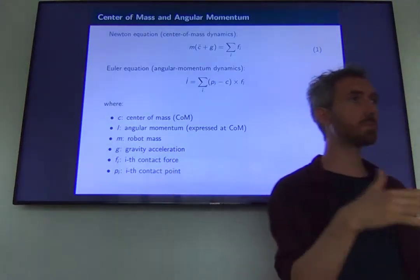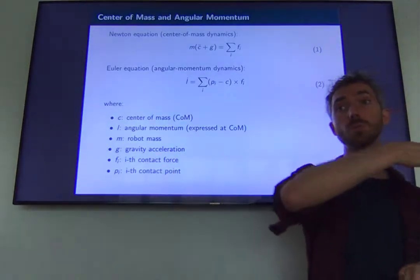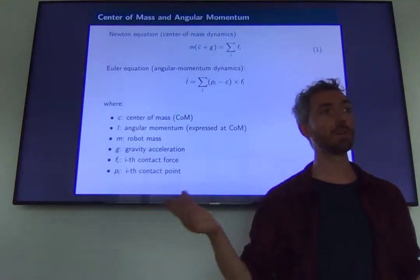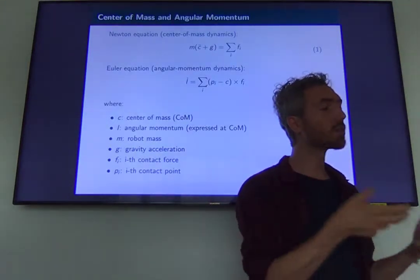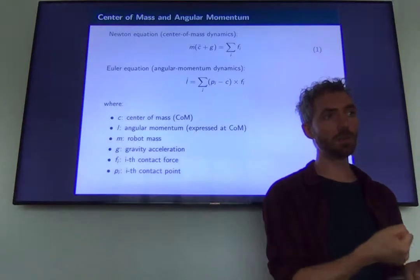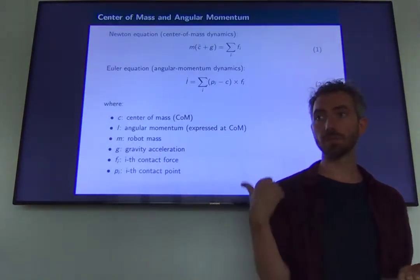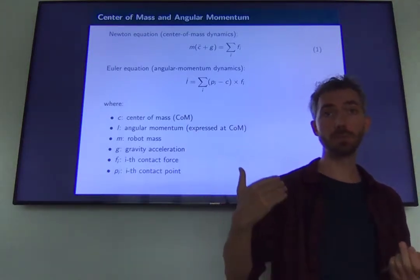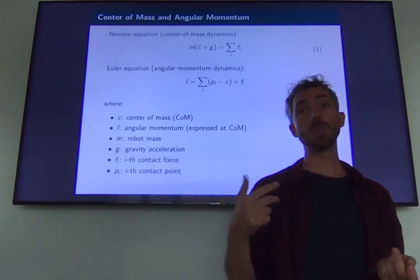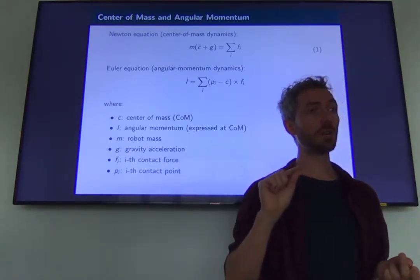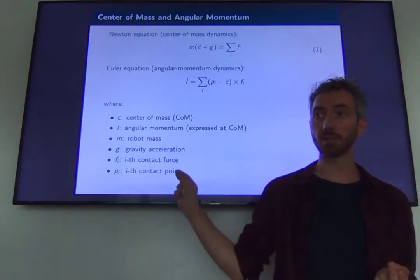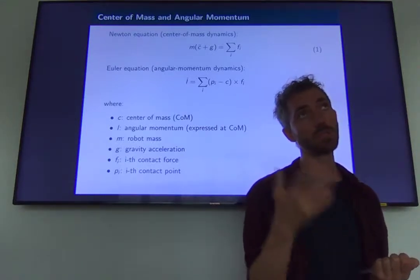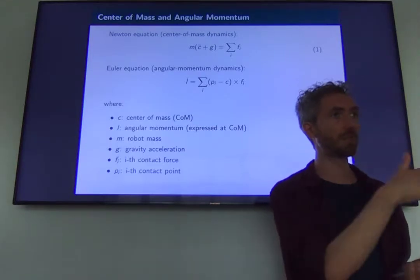Trajectory optimization for hybrid dynamical systems is very hard because it's a non-smooth optimization problem. The other option is to model contacts with penalty methods such as spring-dampers. The problem is that the contacts we are interested in are quite stiff, so we need very high stiffness values, which make the differential equation steep — very difficult to integrate. We need very small time steps for numerical integration, making the optimal control problem very slow to solve.